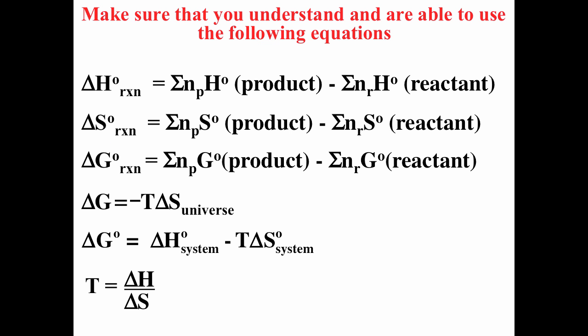Make sure you can understand and apply all these equations. Enthalpy, entropy, and Gibbs free energy are all state functions, calculated as products minus reactants. We define ΔG = −T·ΔS_universe, and equivalently ΔG = ΔH − T·ΔS_system — these are not the same ΔS. The transition temperature is T = ΔH / ΔS. Always watch your units: ΔH is typically in kJ/mol and ΔS is in J/(mol·K).